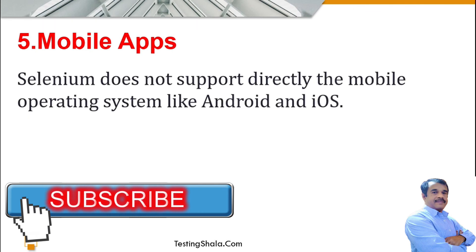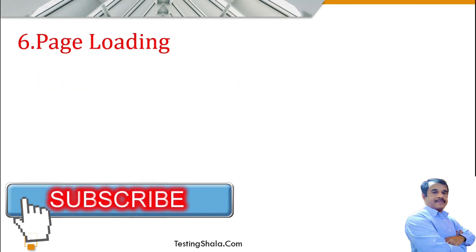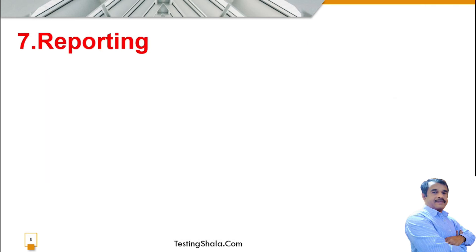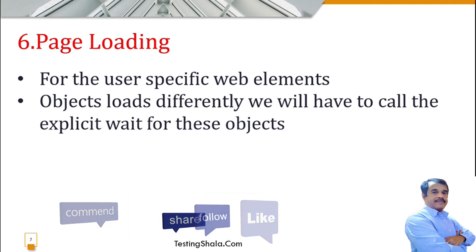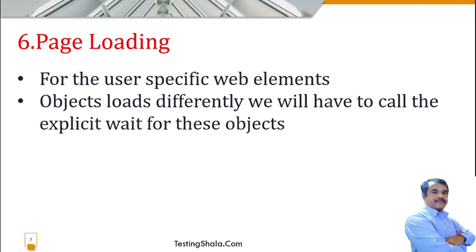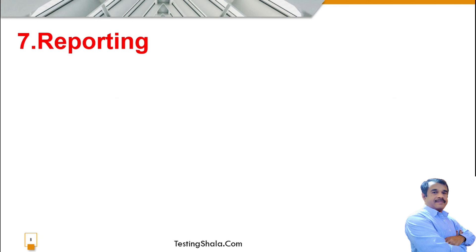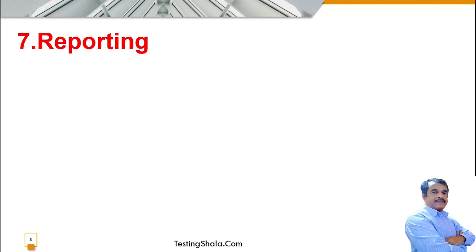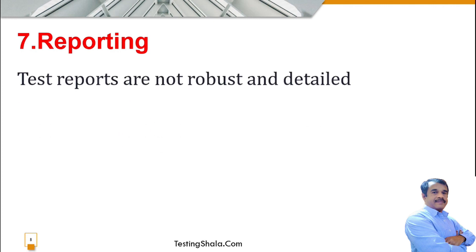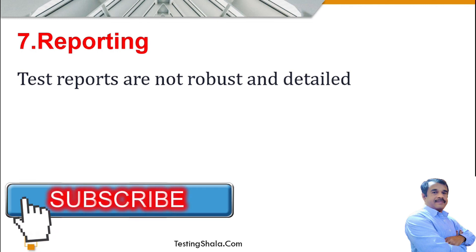The sixth challenge is page loading. When certain objects don't load properly, we should provide different wait mechanisms to get those objects, since pages load differently for every object or situation. The seventh challenge is test reporting. Test reporting is a very huge challenge because testers expect a better reporting mechanism — by going through the automation report they should easily identify issues. However, these reports are not robust, not detailed enough, and are complex and not easily maintainable. These are the seven major challenges in automating using Selenium.